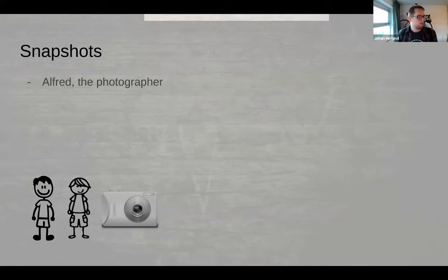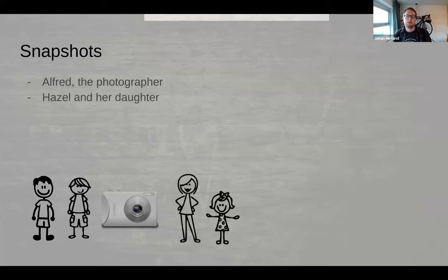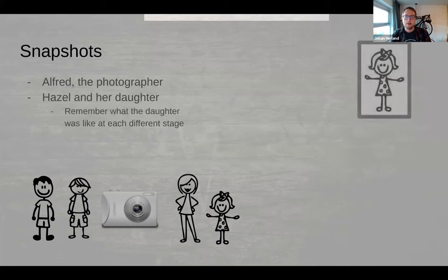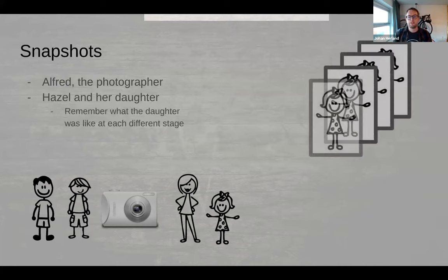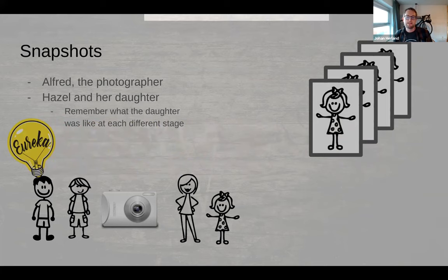But before we start the software project, you have a friend called Alfred. He is a photographer and he works all day long taking awkward family photos. Alfred tells you a story about a woman named Hazel who brings her daughter in for a portrait every year on the same day. She likes to remember what her daughter was like at each different stage as if the snapshots really let her move back and forth in time to those saved memories. You suddenly see the ideal solution to your version control dilemma. What you want are snapshots. These are like save points in a video game and it's what you care about in your version control system. What if you could take snapshots of your code base at any time and then resurrect that code on demand?